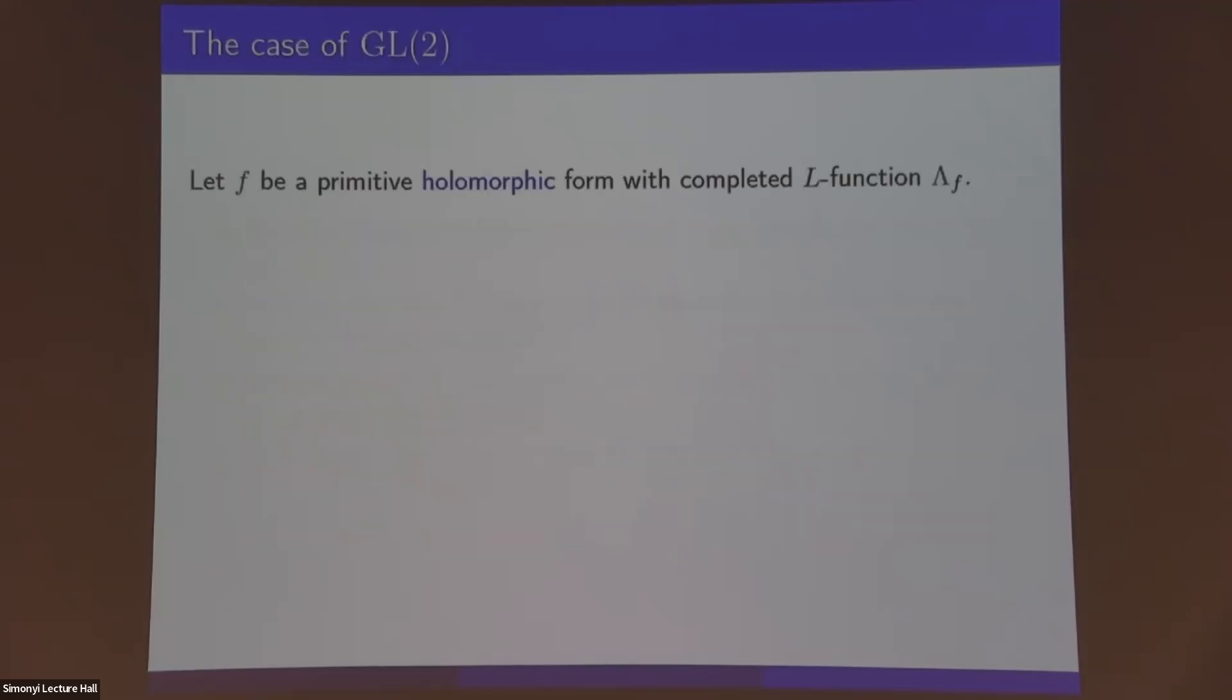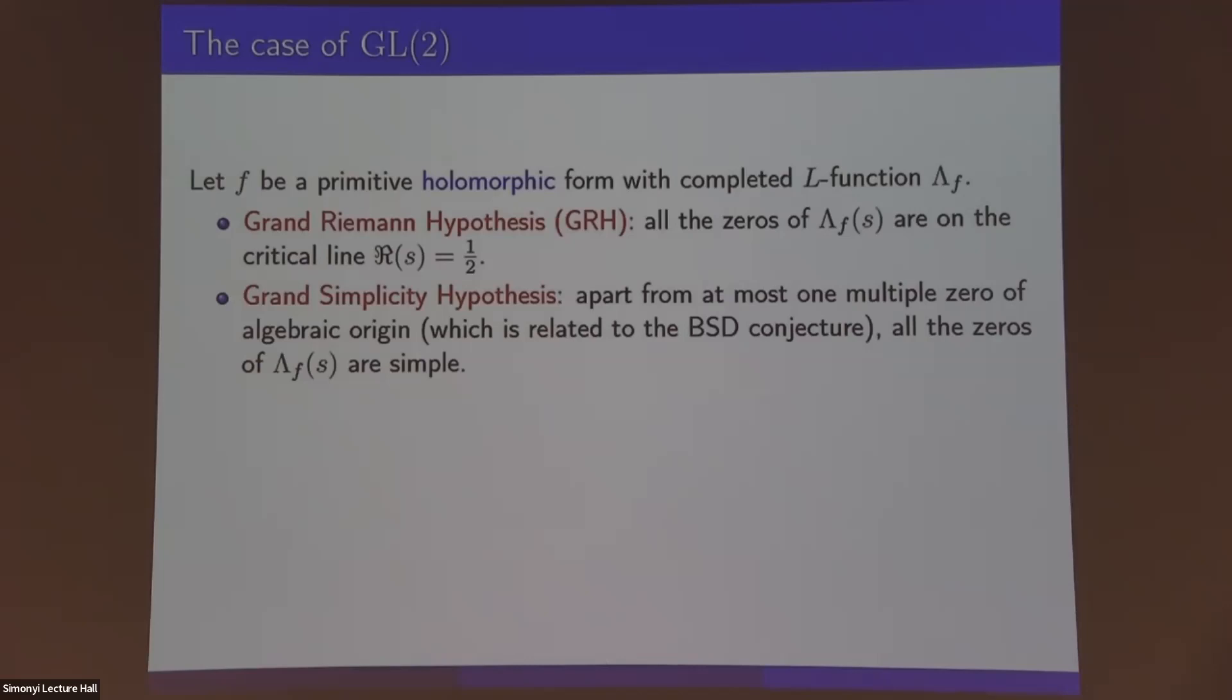So we go to degree two. Here, I'm going to use this notation f throughout the talk for a primitive holomorphic form. Holomorphic is not going to be too important, and its completed L-function will be denoted by lambda f. If you don't know what those are, it's okay. Just think of the L-function as something similar to the zeta function, but with, in a certain sense, twice the complexity. We still have analogs of the Riemann hypothesis and the simplicity hypothesis for such L-functions. All the zeros should be on the half line, and essentially all of the zeros should be simple, unless you have a very good reason for multiple zero coming from the BSD conjecture. We would like to prove something towards either of those, or hopefully both of those hypotheses.